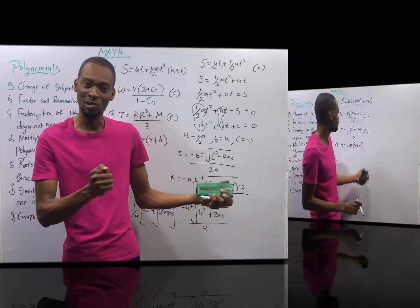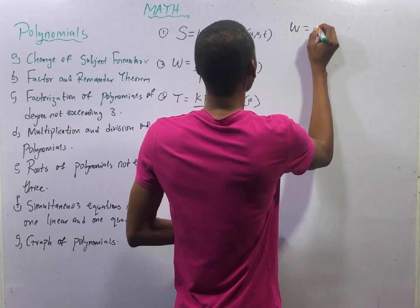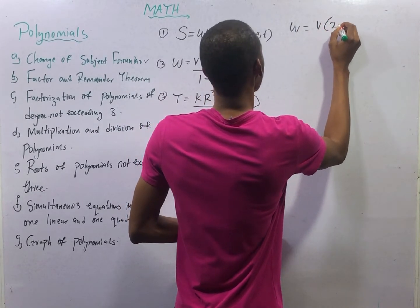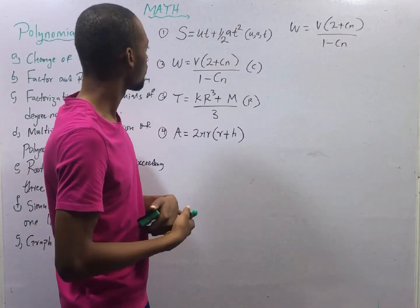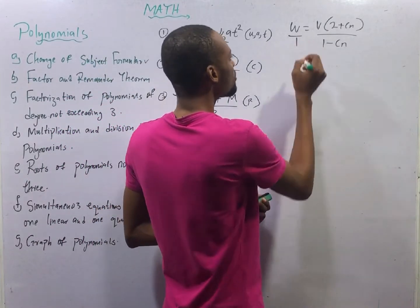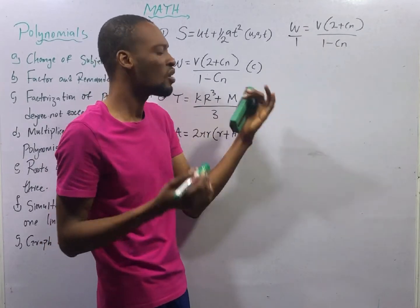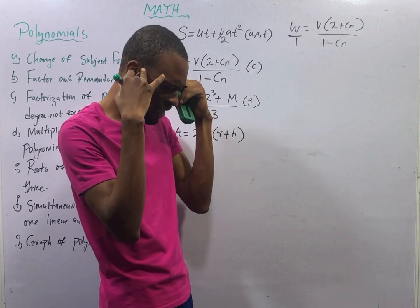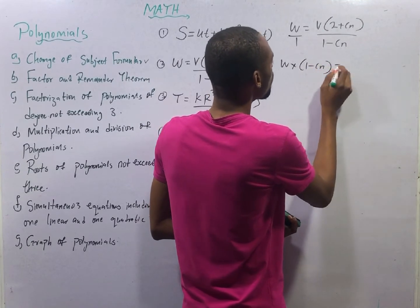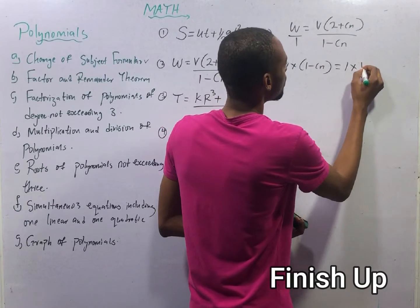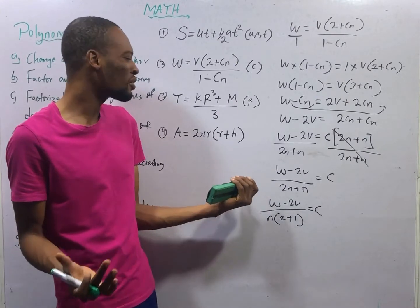We go to the next question. Here, we are making C the subject formula. From W equals (V² plus Cn) over (1 minus Cn), this is the same thing as W over 1. Since we have two fractions separated by an equality sign, what comes to mind is cross-multiply. You will have W times (1 minus Cn) equals 1 times (V² plus Cn). This will be your assignment — you will answer it yourself.